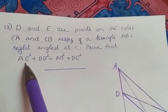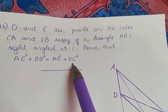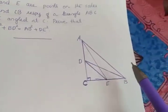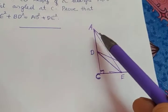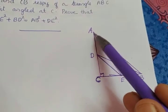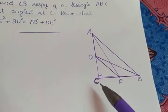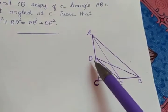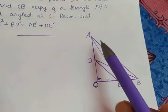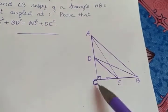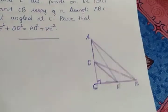We have to prove that AE square plus BD square is equal to AB square plus DE square. You can see many right triangles in the figure — the biggest one is triangle ACB. There is also triangle DCB, triangle DCE, and triangle ACE. In all four right triangles, we will apply the Pythagoras theorem.